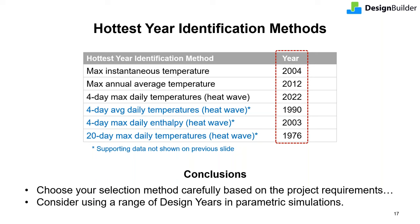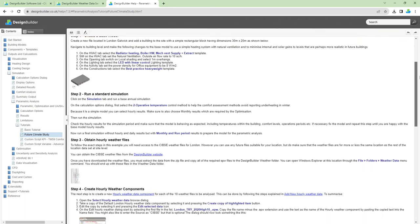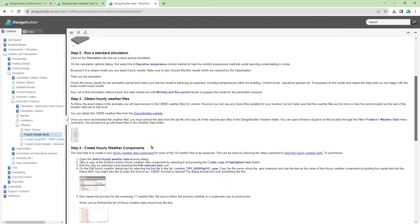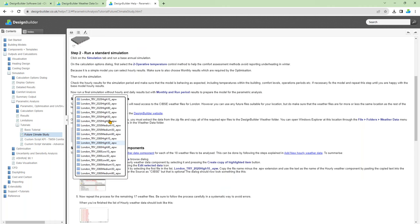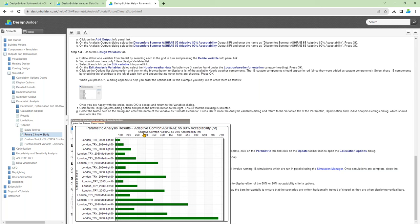It won't always be clear which selection method to use, and in this case you can download weather data for a range of worst case years and check designs using all of them. In our example, you could download all the design years in the table and use parametric analysis to see how a building performs across the range of worst case weather scenarios. The Design Builder program help includes a worked example showing how to check building performance across multiple weather files using parametric analysis, with step-by-step instructions explaining how to set up a parametric overheating study based on adaptive discomfort using weather data as the variable, and how to plot the results for all weather files together in histogram form.